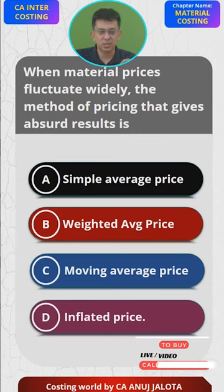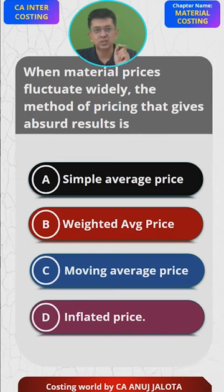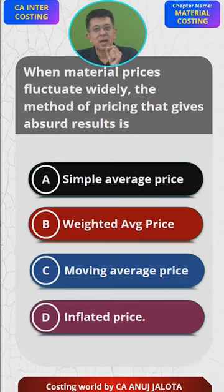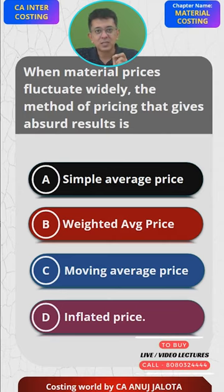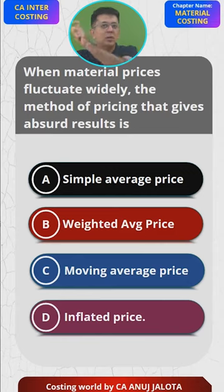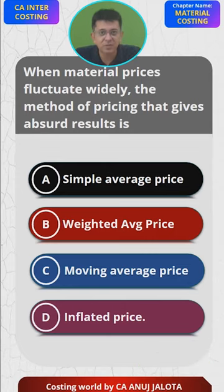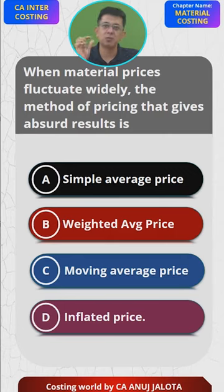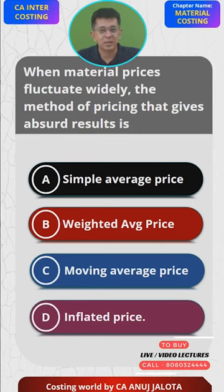Simple average is this: suppose you purchased one unit at the rate of ₹100, and then you purchased 500 units at the rate of ₹200. Under weighted average, you take total of the amounts divided by total of the quantity — that gives you the weighted average price. But simple average will simply be the average of the prices: one lot was purchased at ₹100, another at ₹200, so simple average will be ₹150.